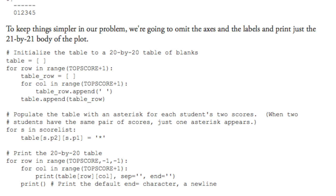Now for the next little function we have, this populates the table with an asterisk for each student's two scores. If students have the same pair of scores, just one asterisk appears. So we have for s in score_list, table[s.p2][s.p1] = star. So what this does is it puts a star in the xy coordinate according to the student's P1 and P2 score. And next we have the actual statement that prints the twenty by twenty table. So this is pretty self-explanatory. Like I said earlier, it does the nested for loops and then it prints the row and column.